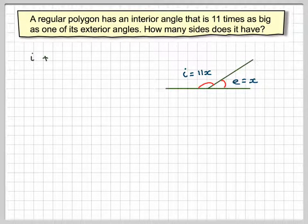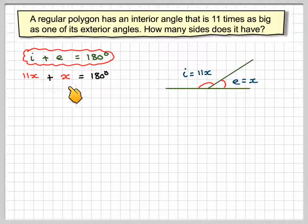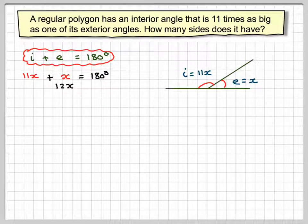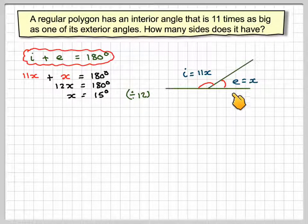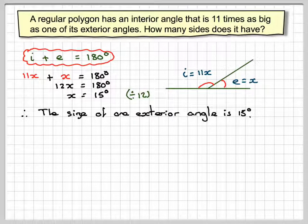Now we know that these two angles here add up to 180. So we can say that 11X plus X is 180, gives that 12X is 180, and therefore divided by 12, we're going to get that X is 15 degrees. So we know that the size of one exterior angle is going to be 15 degrees.